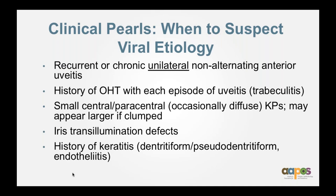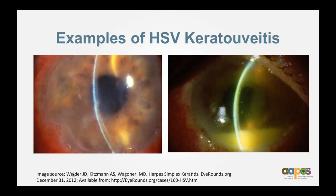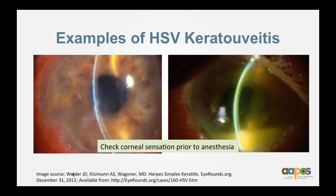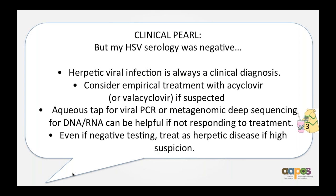Also look for iris transillumination defects and history of keratitis. There's a phenotypic spectrum, but in both case examples shown, there is corneal stromal involvement. Check corneal sensation prior to anesthesia. Clinical pearl: a negative HSV serology does not rule out HSV uveitis — herpetic viral infection is always a clinical diagnosis. In children, because we usually need to put them to sleep for an aqueous tap, consider empirical treatment with acyclovir or valacyclovir if the diagnosis is suspected. If not responding, consider aqueous tap for viral PCR or metagenomic deep sequencing for DNA/RNA. Even if testing is negative, treat as herpetic disease if there's a high index of suspicion.